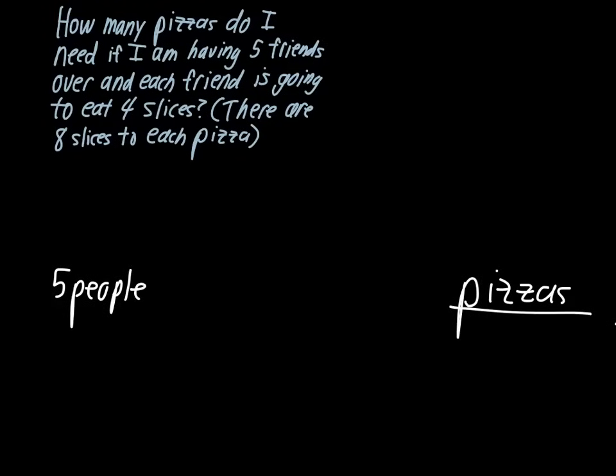This is a good example of one where you don't always need something in the bottom. We're just going to leave the five people up there by themselves for now. The next piece of information that we have in the problem is that each friend is going to eat four slices of pizza. So we've got four slices for each person. So people and person, those cross out. It's not exactly the same word, but we're basically just going from plural to singular. Four slices for each person, five total people.